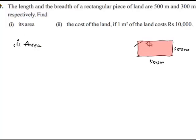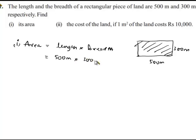We know that area is the amount of surface covered by the closed boundary, and its formula for a rectangle is given as the product of length and breadth. In the problem, the length is given as 500 meters and breadth as 300 meters.